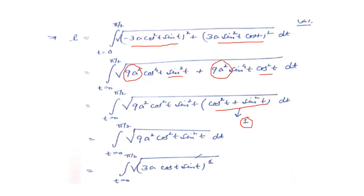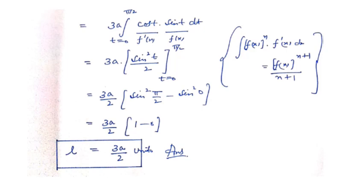This entire expression is the whole square of 3a·cos(t)·sin(t), so the square root and square cancel. We are left with 3a·cos(t)·sin(t) inside the integral from 0 to π/2, with 3a taken out as a constant.